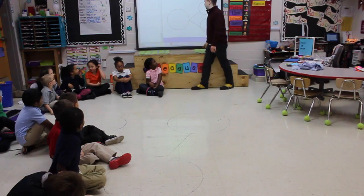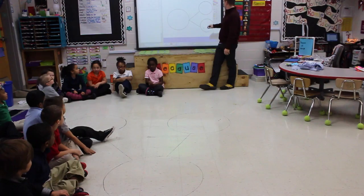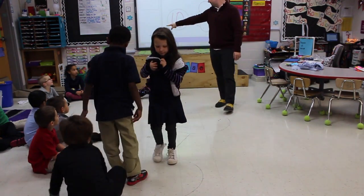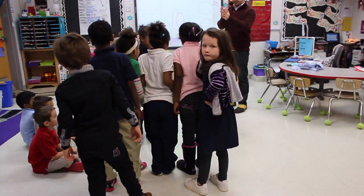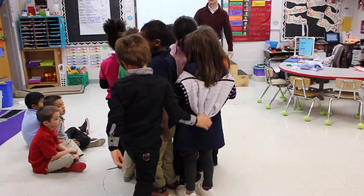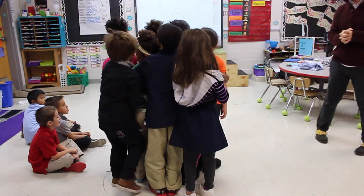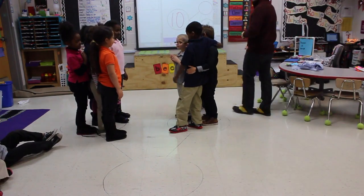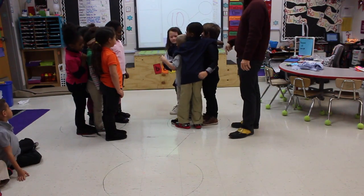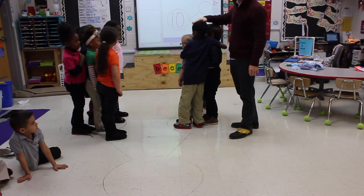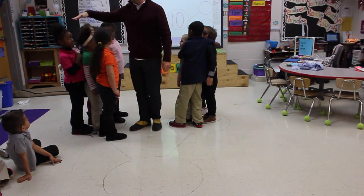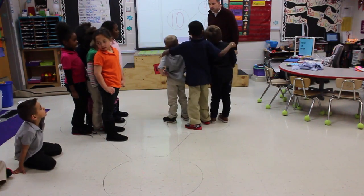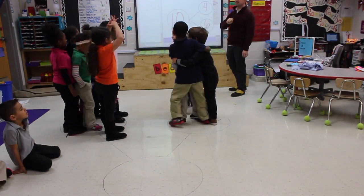So what does decompose mean? Put it apart. Alright, guys. Ten. One, two, three, four, five, six, seven, eight, nine, ten. I'm waiting on you to get still, honey. Here we go. Let's count. One, two, three, four. And four and? One, two, three, four, five, six. So we decomposed ten into what two numbers? Four and six. Four and six make ten. Thank you. Have a seat.